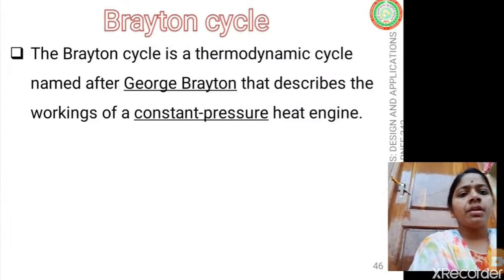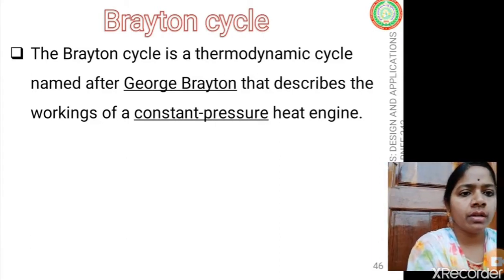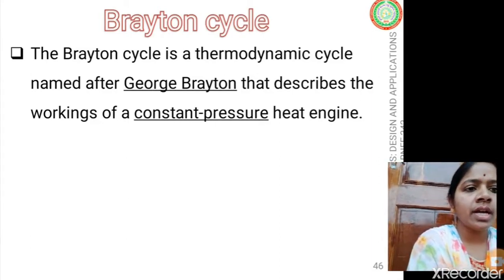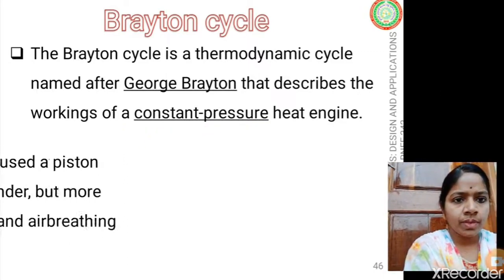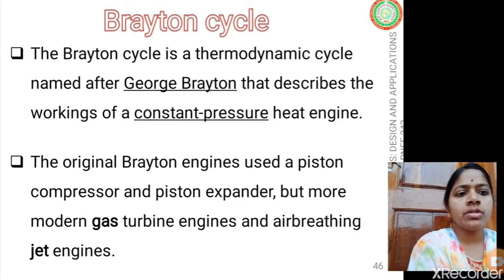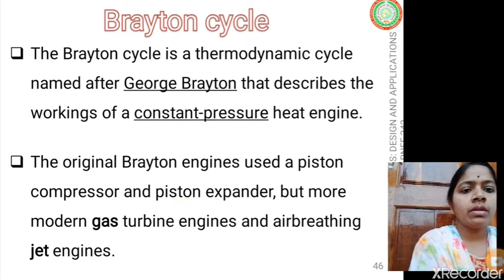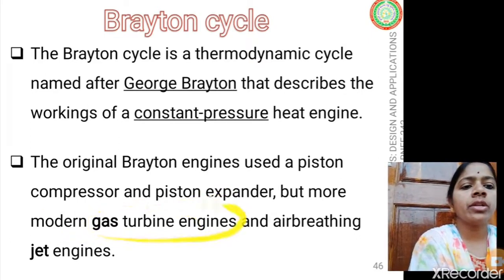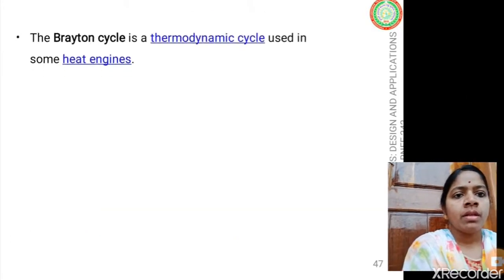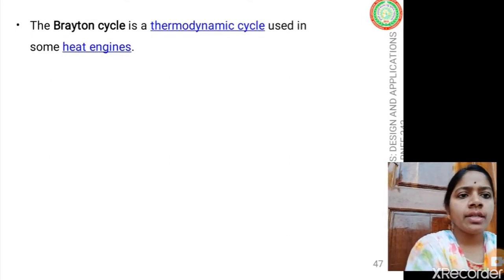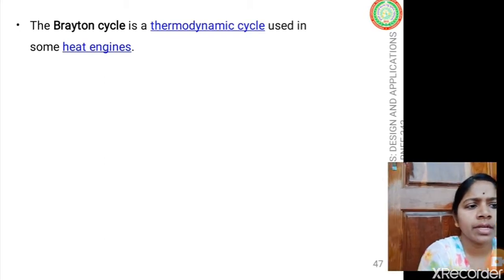The Brayton cycle is a thermodynamic cycle named after George Brayton that describes the working of a constant pressure heat engine. The original Brayton engine used a piston compressor or piston expander, but most commonly gas turbine engines are adapted to run based upon the Brayton cycle principle. The Brayton cycle is a thermodynamic cycle used in some heat engines.